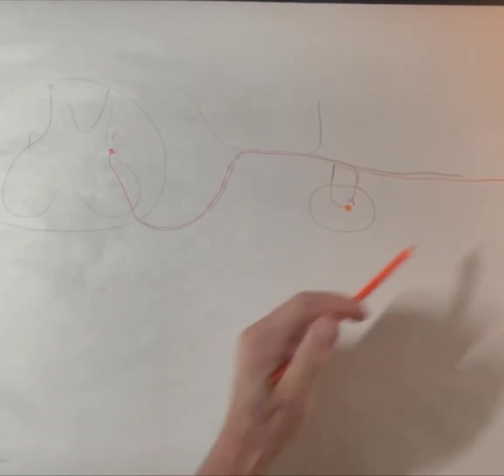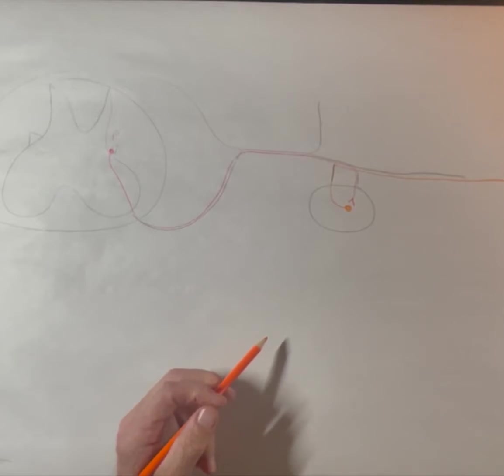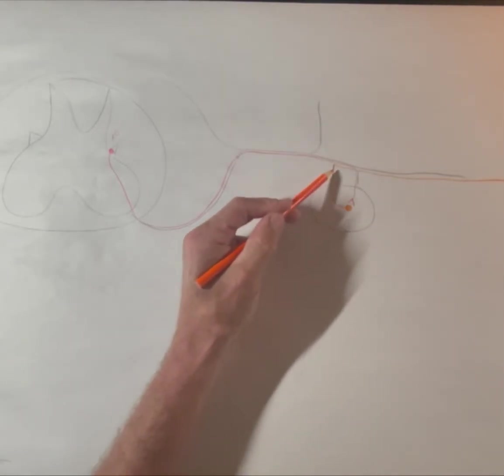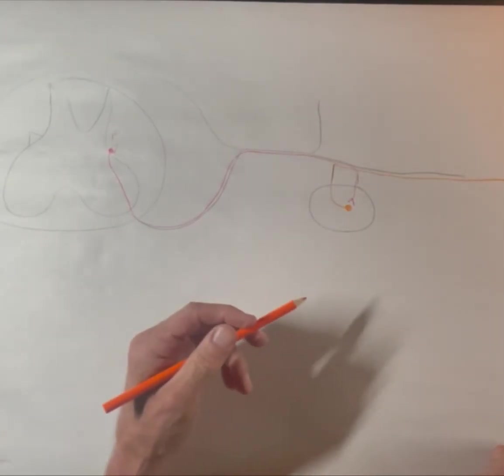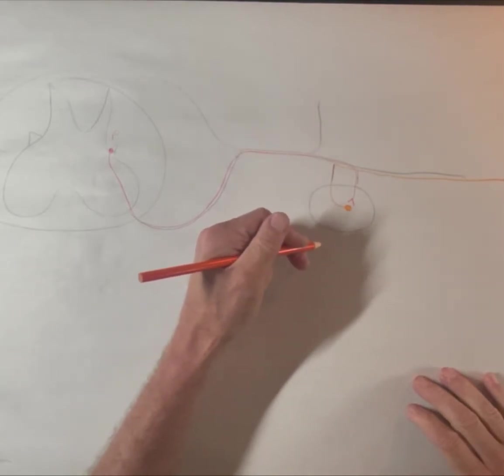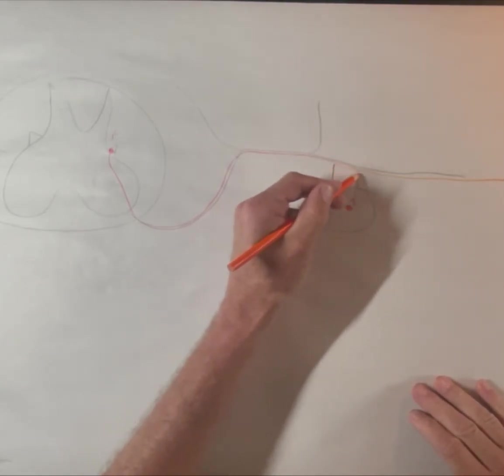postganglionic axons following along with those nerves that are going out that way. So that's what autonomic nerves do. They follow the infrastructure that is already laid down. So you have these tiny little axons following along the big ones that are somatosensory or motor.